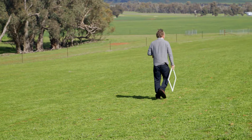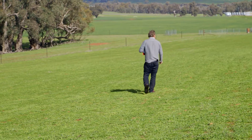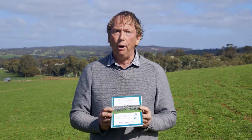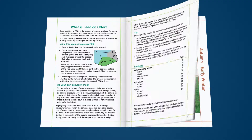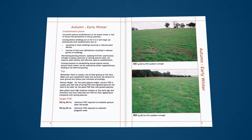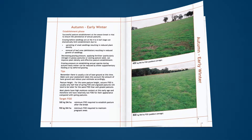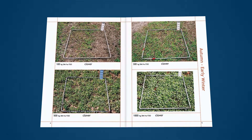In terms of assessing the food on offer for a paddock, we've got a guide and we've published photos of varying levels of pasture production. This guide is broken into three seasons: at the break of the season, midwinter, and into spring. It's also broken up into different pasture types — a grass pasture, a legume-based pasture, and also a mixed pasture.